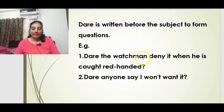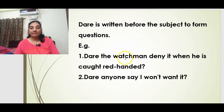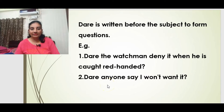Dare is written before the subject to form questions. Examples: 'Dare the watchman deny it when he is caught red-handed?' — meaning, how can he deny it when caught? 'Dare anyone say I won't want it?' — meaning nobody can say that; everybody wants it.